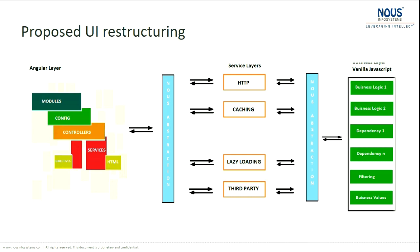To explain this concept technically, this diagram illustrates it. Technology is supplementary to a product — you should not tie up your technology with your business logics. That's why we keep the Angular layer completely independent of the application. The green blocks on the right side of the picture are business logics written in pure JavaScript — whether HTTP calls, caching, or lazy loading.